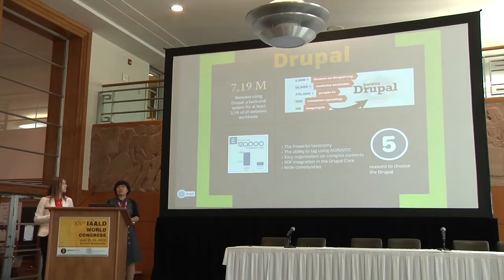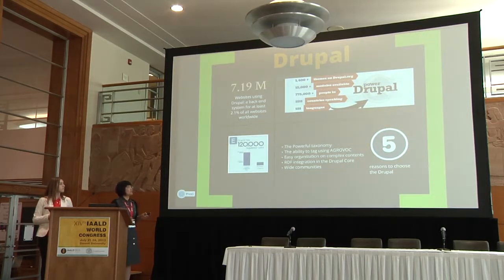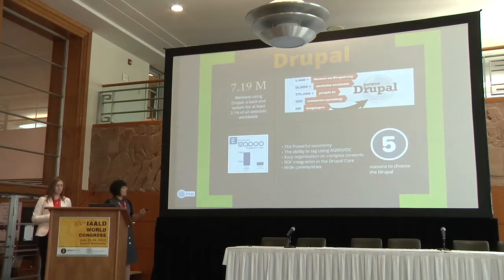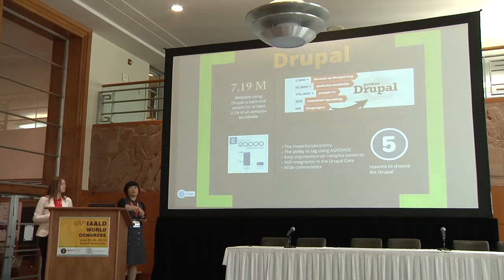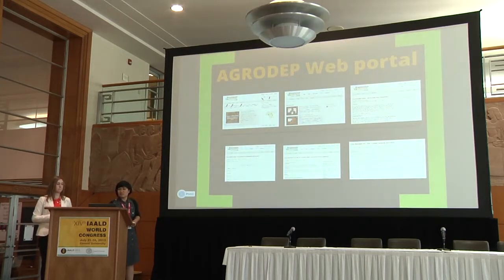Let's talk about Drupal by the numbers. We have 7 million websites using Drupal, 120,000 registered users, and 15,000 contribute to modules, which means it's free. There are 5 different reasons we chose Drupal. First is taxonomy — Drupal has powerful taxonomy. Second, you can use it as a tagging method. Third, it's very good for building complex structures. Fourth, Drupal 7 includes RDF as part of the core for linked open data. And fifth, it has a wide community for support. That's why we chose Drupal.